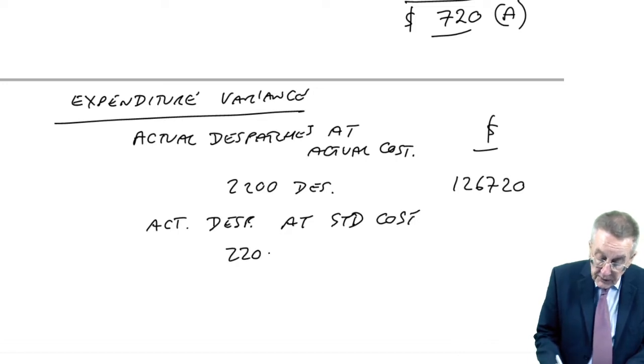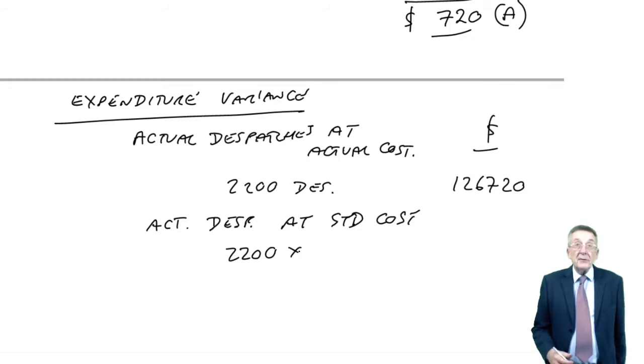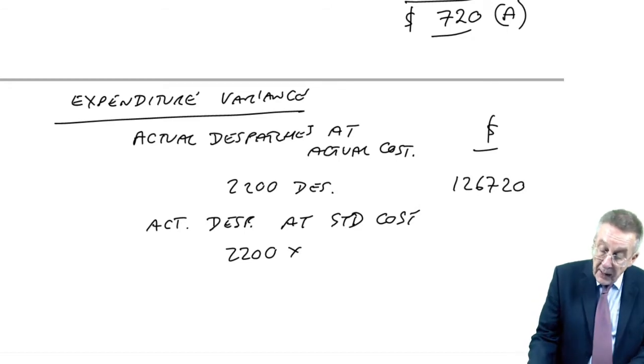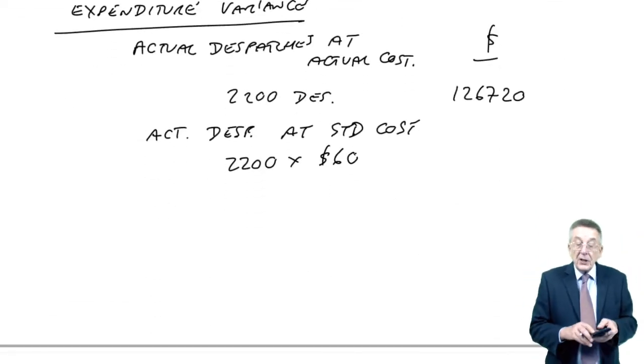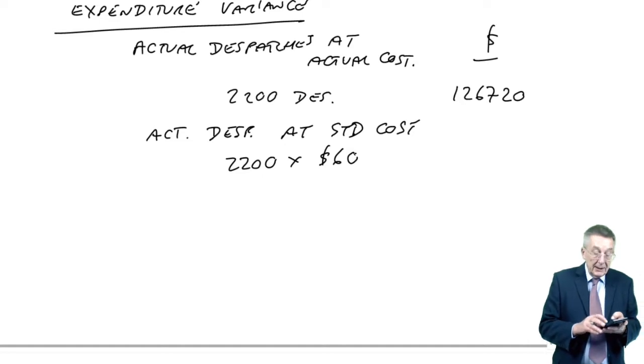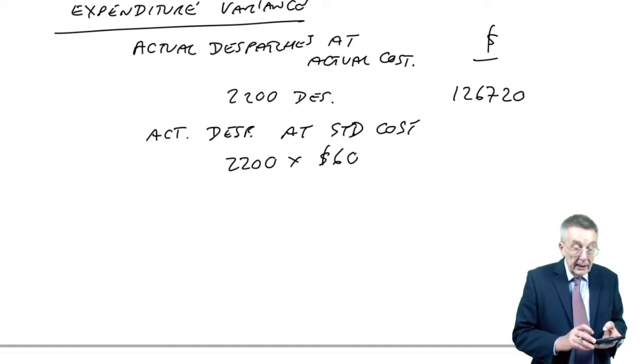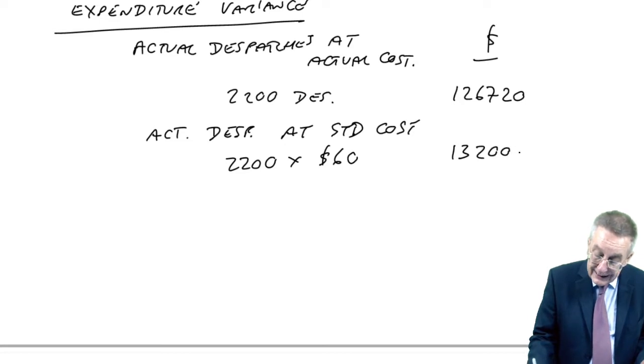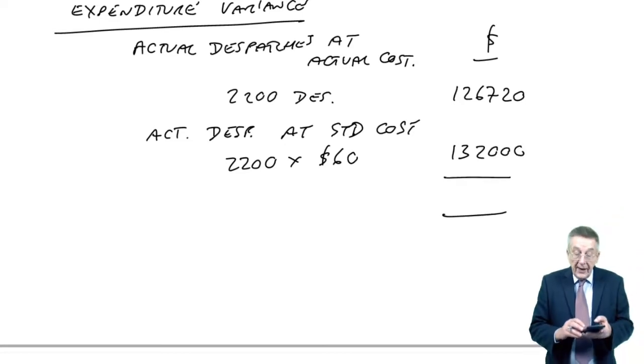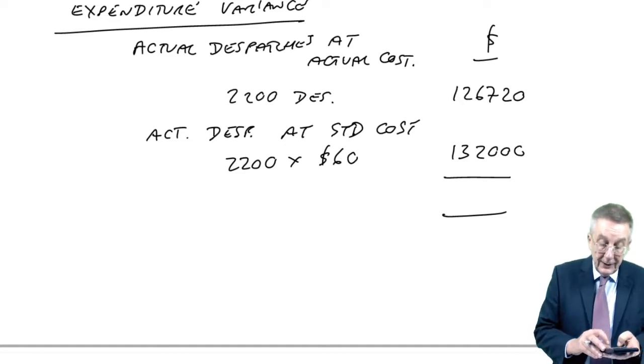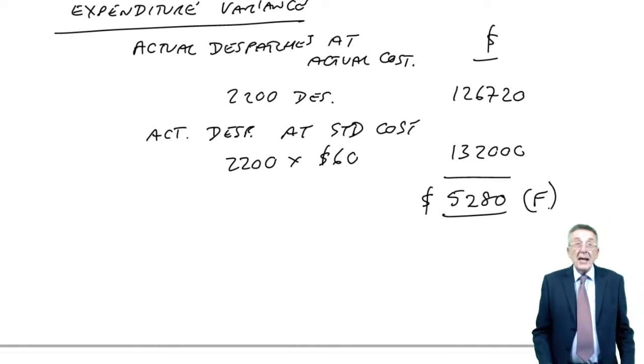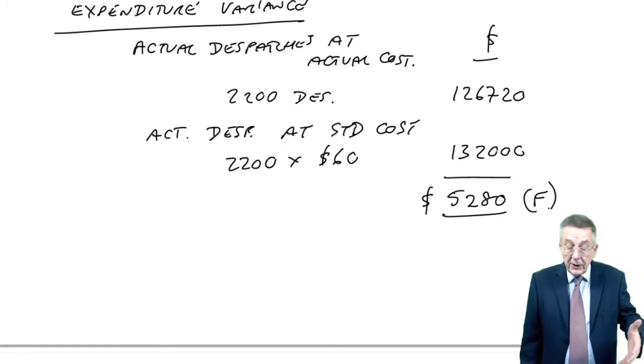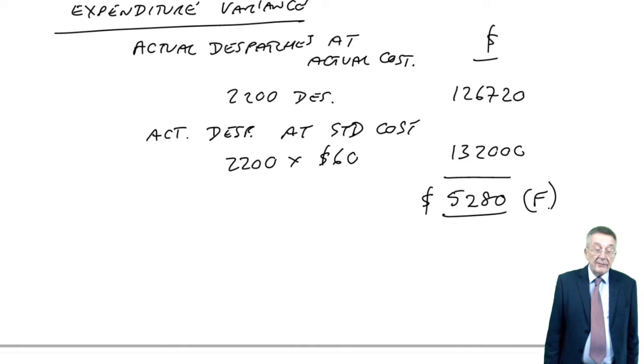Well, there were 2,200 actual dispatches. But how much did it cost? The actual cost was 126,720. How much should it have cost if we'd paid the right price per dispatch? So actual dispatches at standard cost. Well, again, there were 2,200 dispatches. And I worked out a few minutes ago, if it went according to plan, each dispatch would have cost $60. And so we would have expected to spend $132,000. And therefore, the variance is 5,280 favorable.